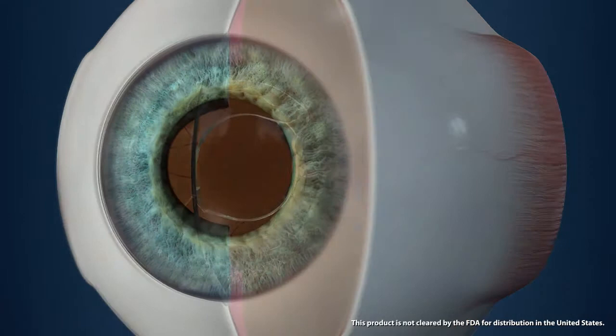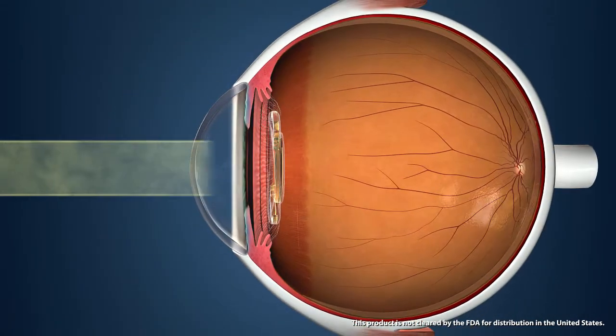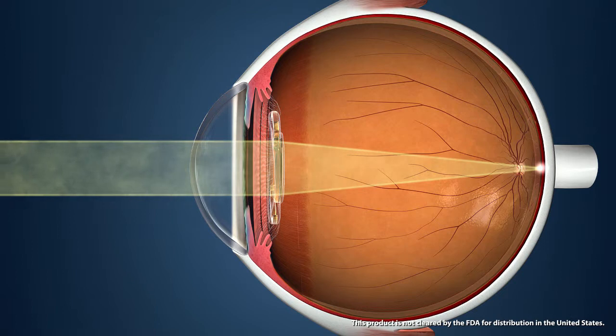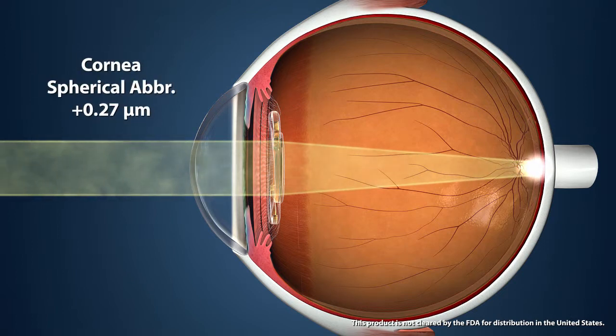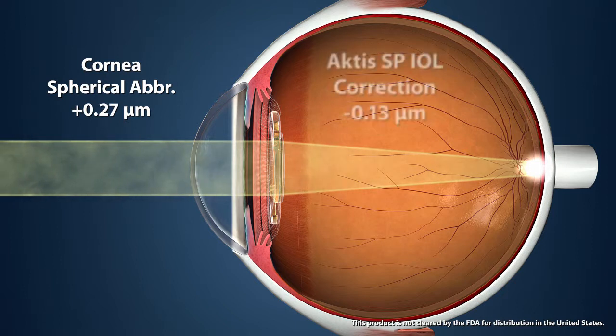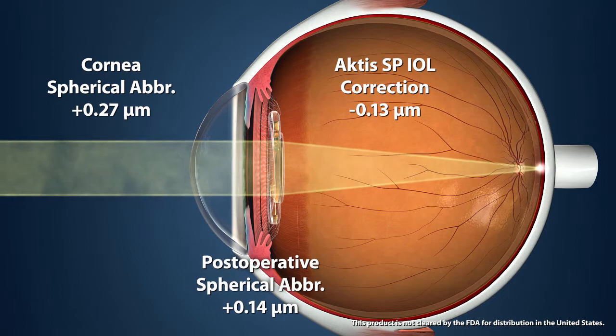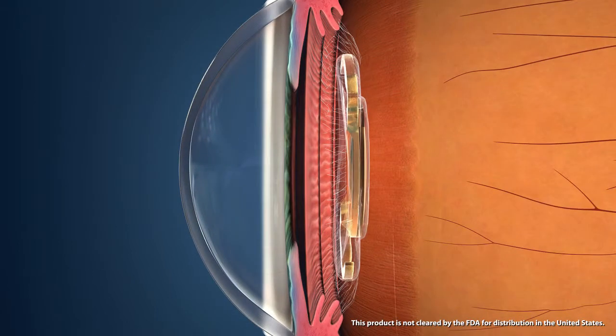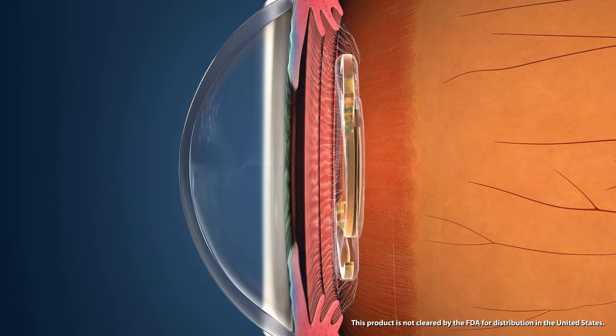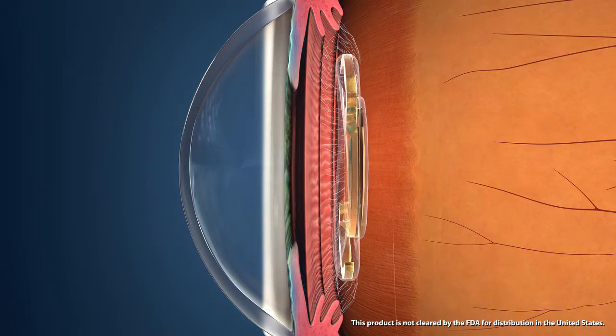The Actis SP is an aspheric IOL designed to compensate for average corneal spherical aberration, which is positive 0.27 micrometers in a normal cornea. The Actis SP corrects negative 0.13 micrometers, targeting a total postoperative spherical aberration of positive 0.14 micrometers, increasing depth of focus. This feature also helps to compensate for any IOL deviation within the capsule or bag.